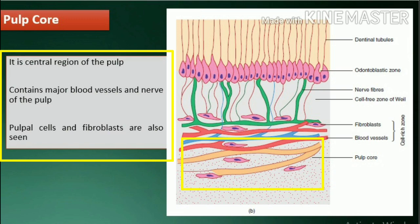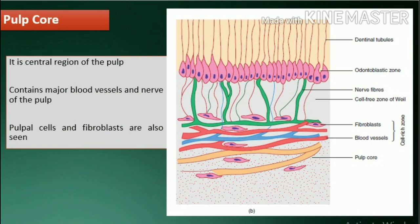Pulp core. The pulp core is the central region of the pulp. It contains the major blood vessels and nerves of the pulp. Pulpal cells and fibroblasts are also seen.